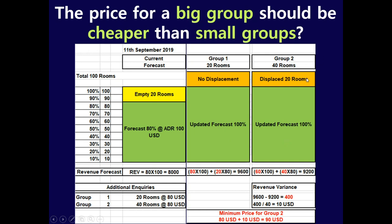If we still want to take Group 2, we need to ask them to pay more than 80 USD. The revenue difference between Group 1 and Group 2 is 9,600 minus 9,200 equals 400 USD. Divided by the 40 rooms in Group 2, that equals 10 USD per room. So Group 2 must pay at least 90 USD per room instead of 80 USD to match the profitability of Group 1. Let's move on to the next exercise.